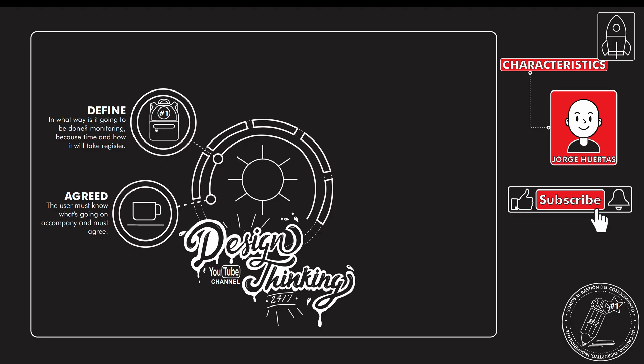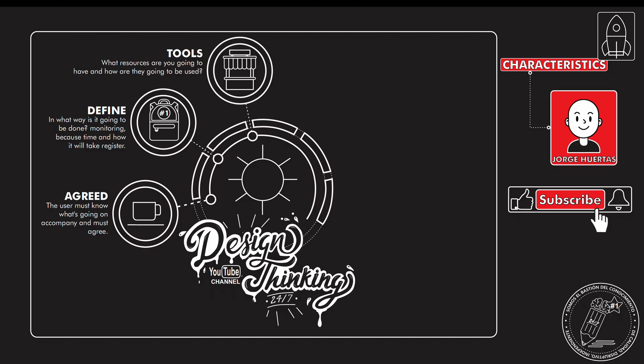You need to explain and define how the work will be done — how the monitoring will happen. Will you follow them for a day, a couple of hours, or a month? You need to be completely transparent with the user. Shadowing literally means following that person, so it's very important to know which tools you will use to collect the information.